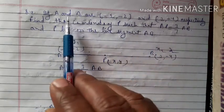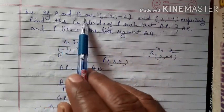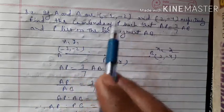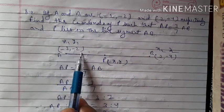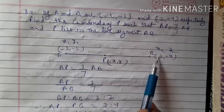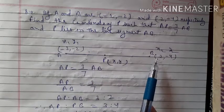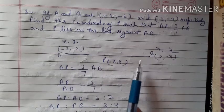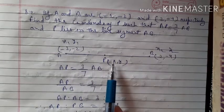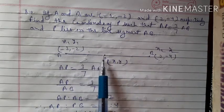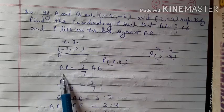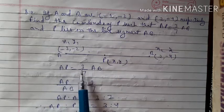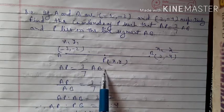A is (-2, -2) and B is (2, -4). We need to find P such that AP is equal to 3/7 AB.